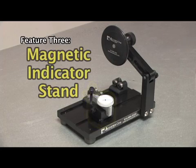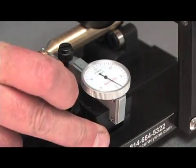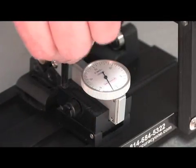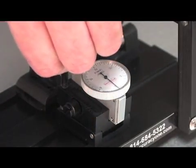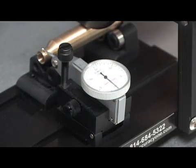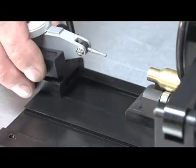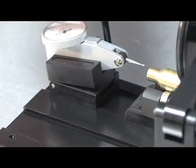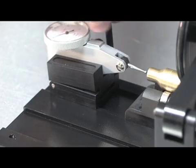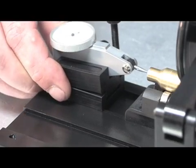The next feature I'd like to show you is the indicator stand, which allows for fine, easy adjustments. The indicator stand has the same magnetic adjustability as the roller blocks. It has also been designed to ride in both machine slots to allow for both internal and external adjustments.